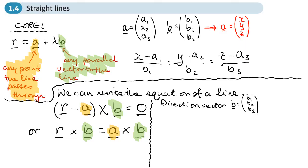If we write b1, b2, b3 as a ratio — the book uses x, y, z — this is what we call the direction ratio. So we take those three numbers in the direction and write them as a ratio.